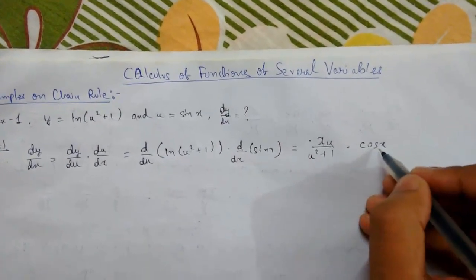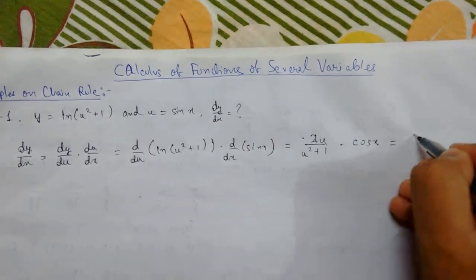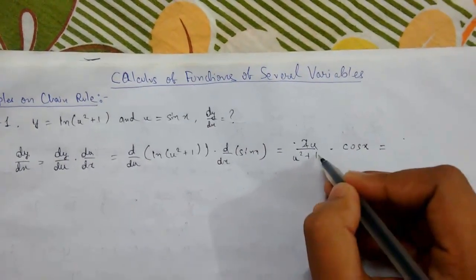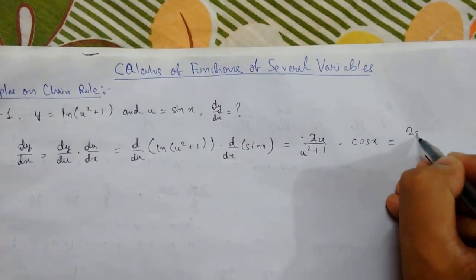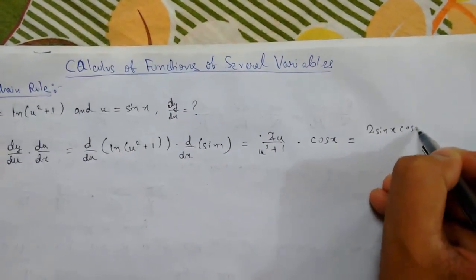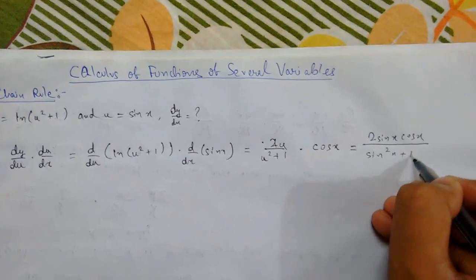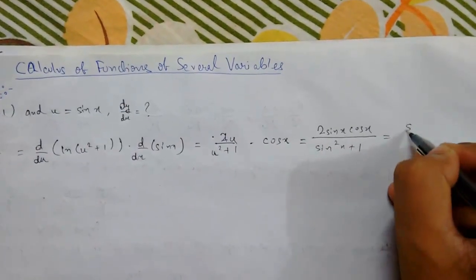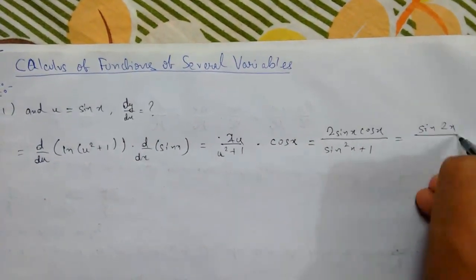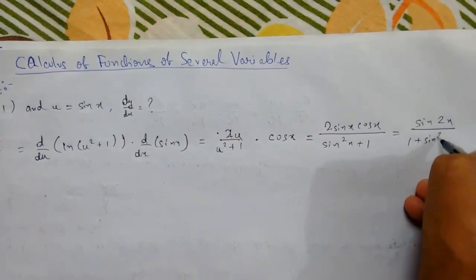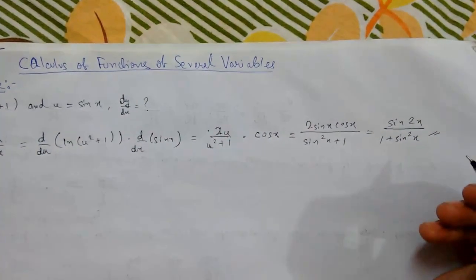So putting the value of u we get 2sin(x)cos(x)/(sin²(x) + 1). This simplifies to sin(2x)/(1 + sin²(x)). So this is our answer.